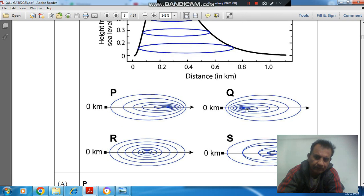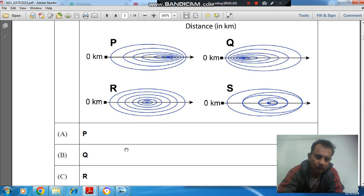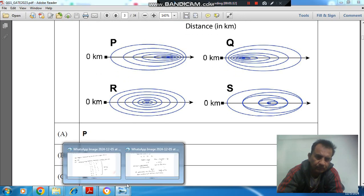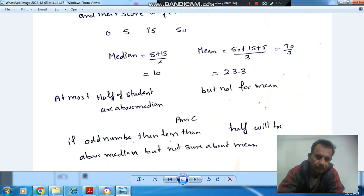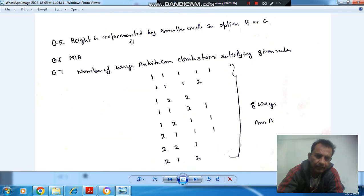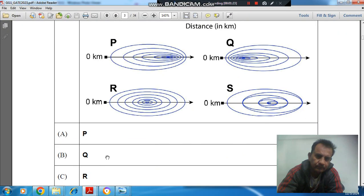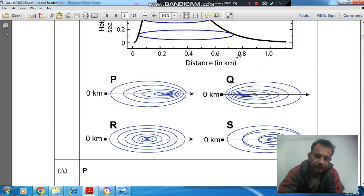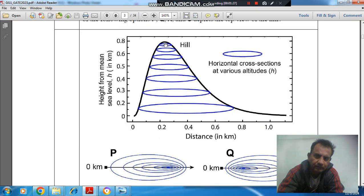So this represents the correct figure. The answer is option B. Height is represented by a smaller circle, so option B is correct. The smaller circle is here representing the height. So answer is option B.